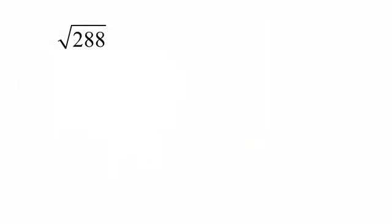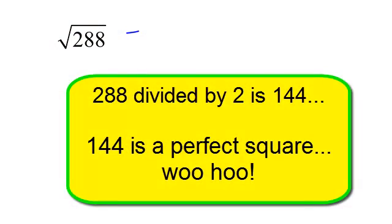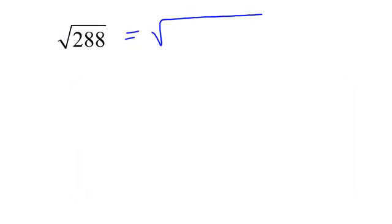When I take 288, divide it by 2, I get 144. And if I'm familiar with my perfect squares, I know that's exactly what I wanted. Once again, 144 times 2 is 288.